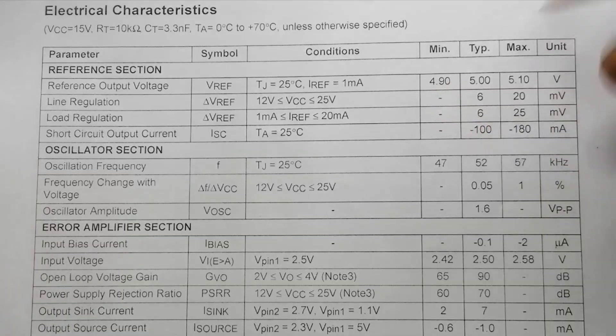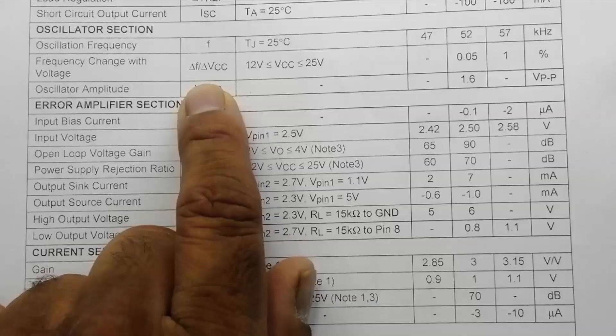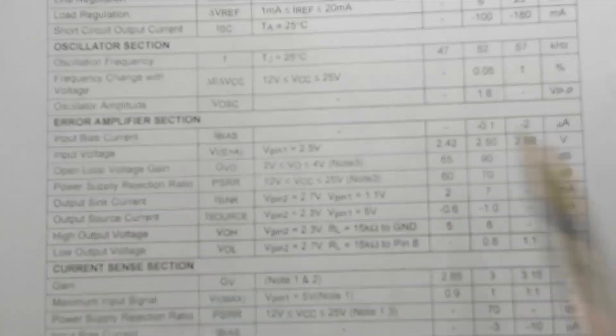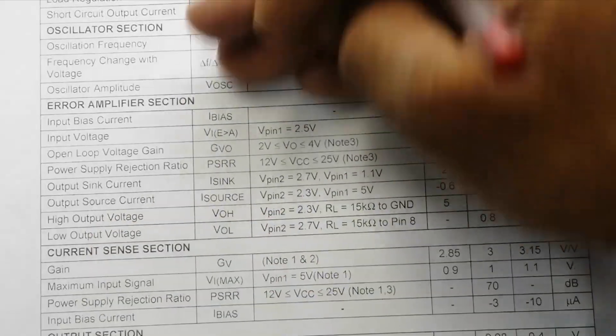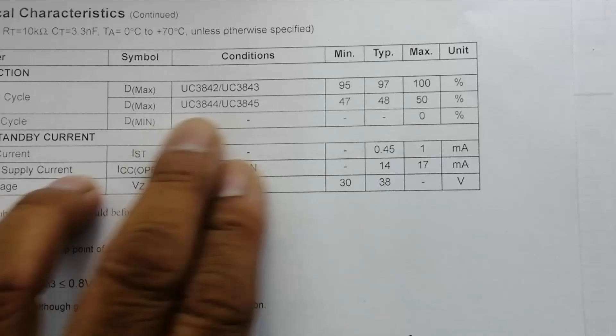Here is delta change in frequency and delta change in VCC, frequency change with voltage. Error amplifier and current selection, different parameters are covered here. Here is discussion about duty cycle.